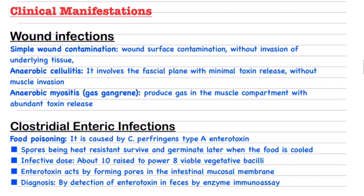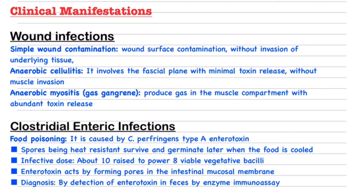Next, the infection can also cause enteric infection, affecting our gastrointestinal tract. First, it causes food poisoning — spores enter the body through food. Because the spores are very heat resistant they do not die from heat, and when food cools, the spores germinate and cause infection.